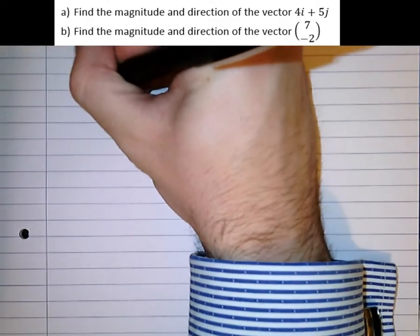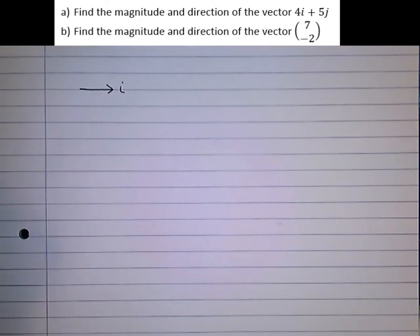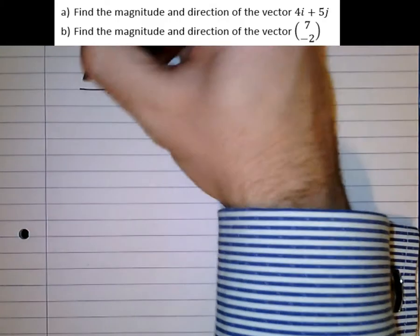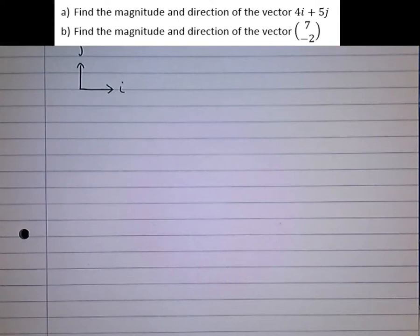Our positive i direction is the positive horizontal direction. Up until this point you'll have called that the x direction, but in vectors it's the i direction. The j direction is what you would have called the y direction up until now, but in vectors we call it the j direction. So find the magnitude and direction of the vector 4i plus 5j.